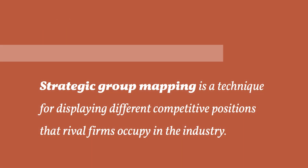The best technique for revealing the market positions of industry competitors is strategic group mapping. Strategic group mapping is a technique for displaying the different market or competitive positions that rival firms occupy in the industry.